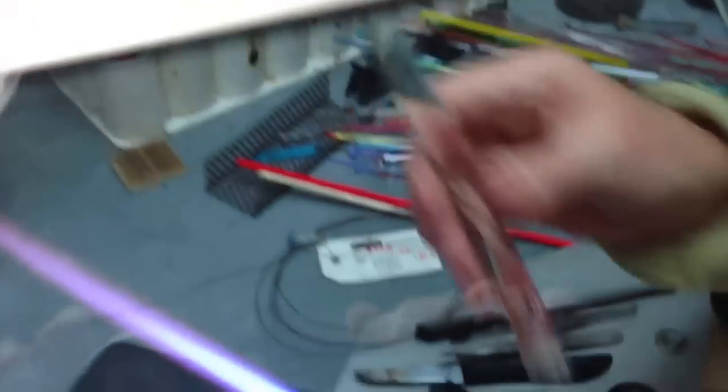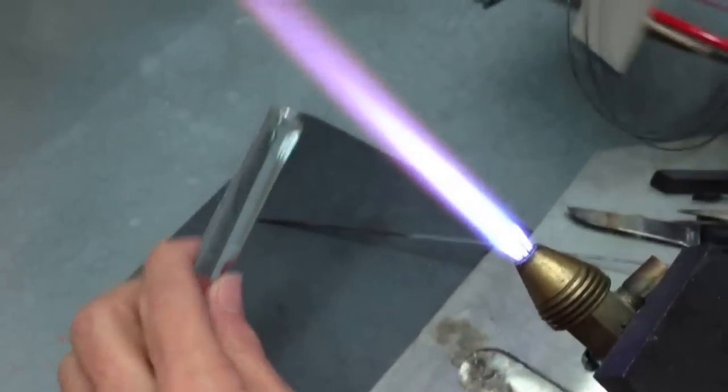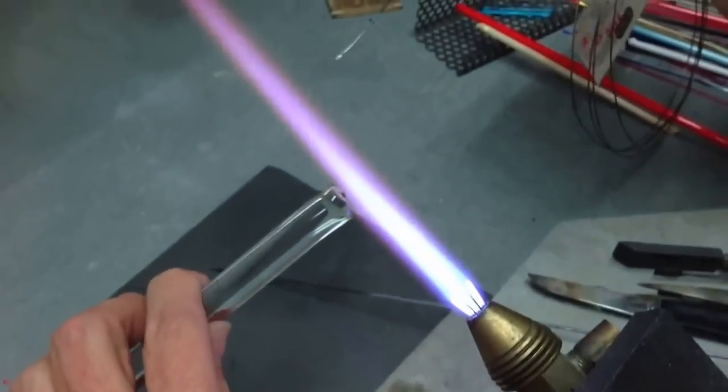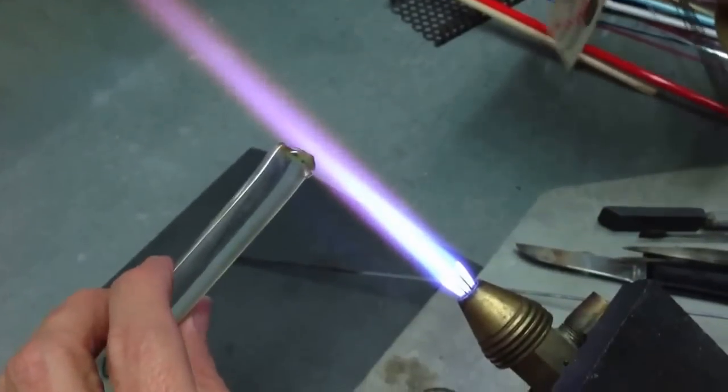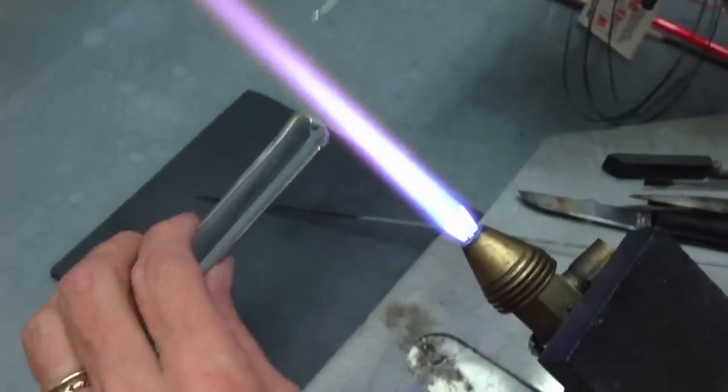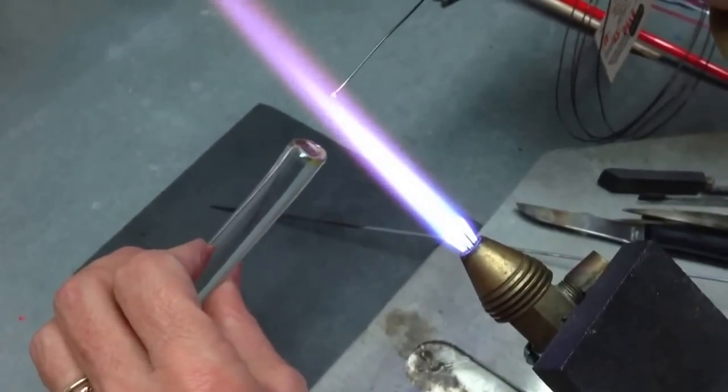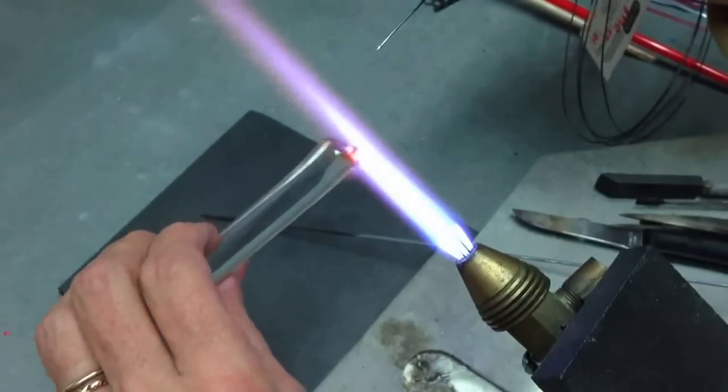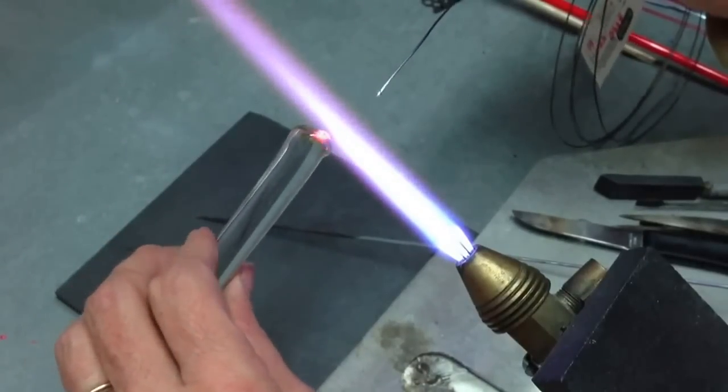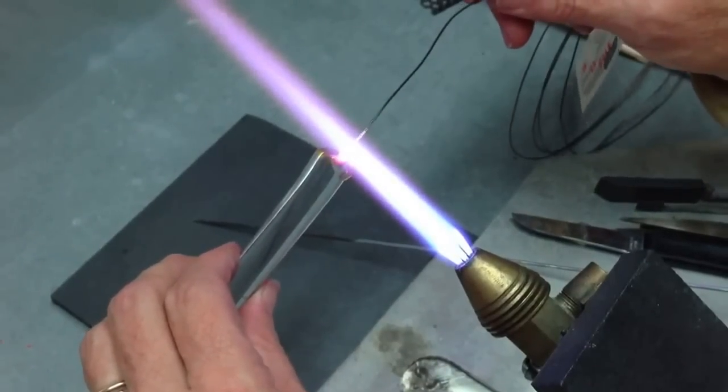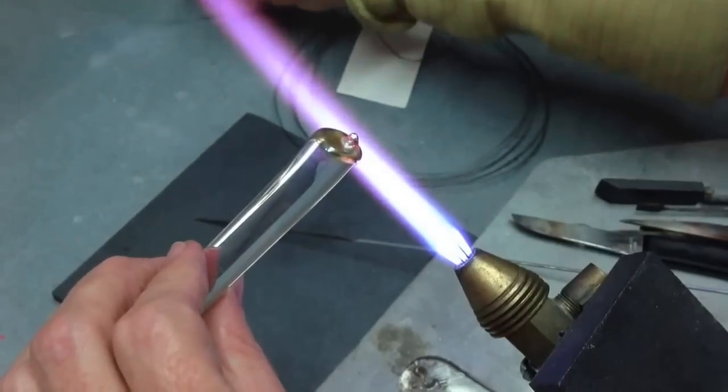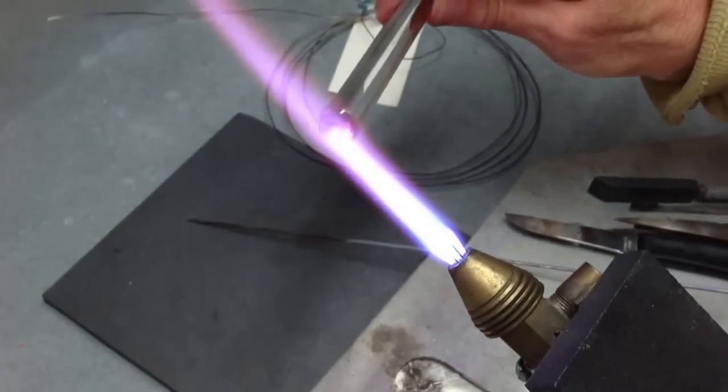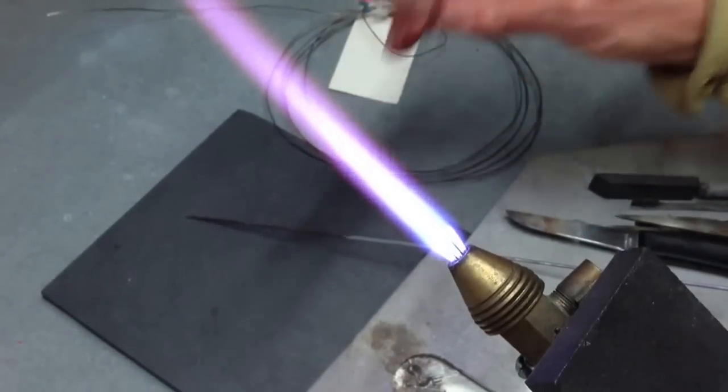Basically you heat your borosilicate up a little bit so when you heat your fine silver it'll attach to it. You just heat up a little ball of it and drop it on, then heat up the borosilicate again to make sure it's nicely attached. This stays hot for a while, so make sure you have it in a place where you're not going to stick your hands on it.